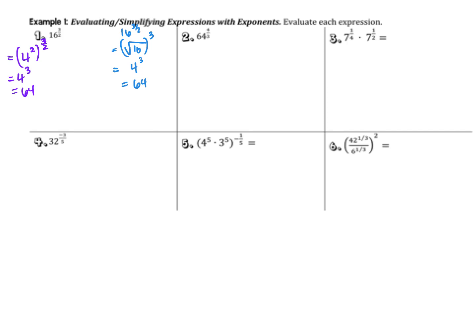For number 2, 64 to the power of 4/3. 64 makes me think of 4 to the third, which pairs nicely with the 3 in the denominator. So 4 to the third, to the power of 4/3, becomes 4 to the fourth, which is 256. Using radicals, this is the cube root of 64 to the power of 4. The cube root of 64 is 4, and 4 to the fourth is 256.